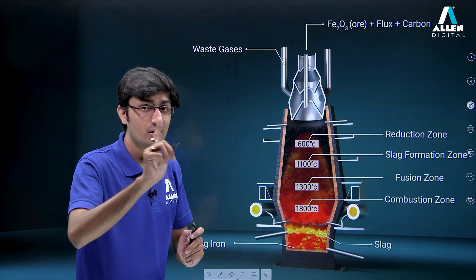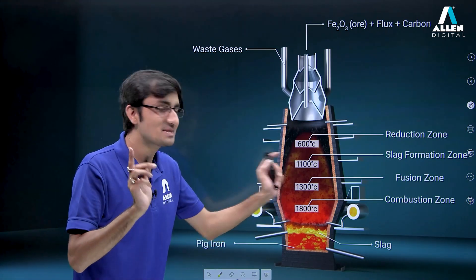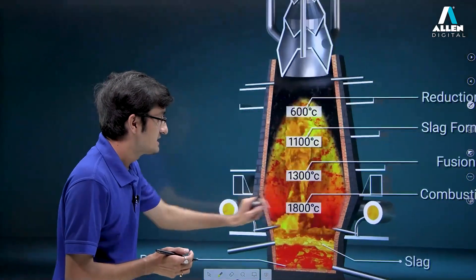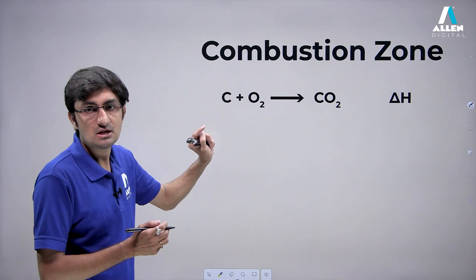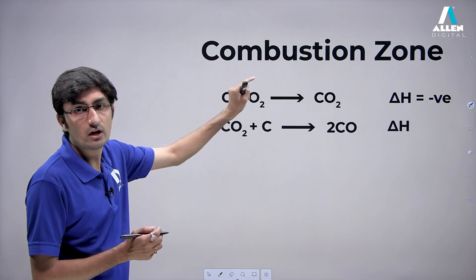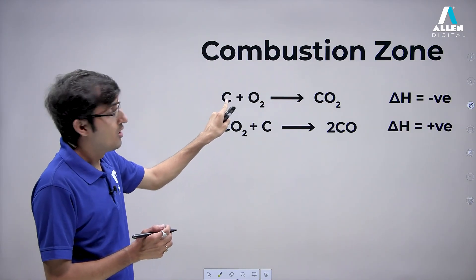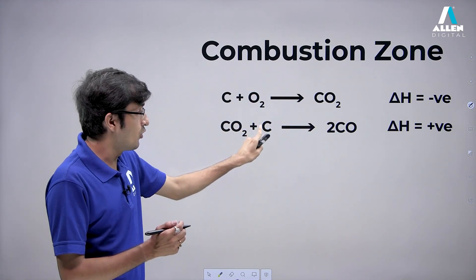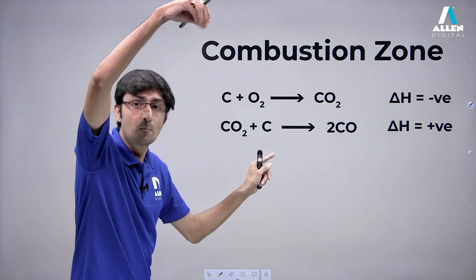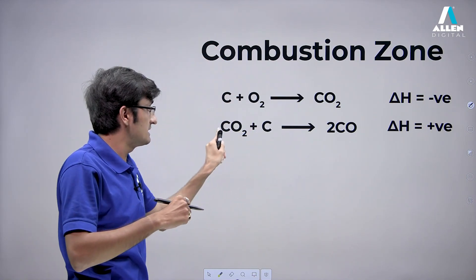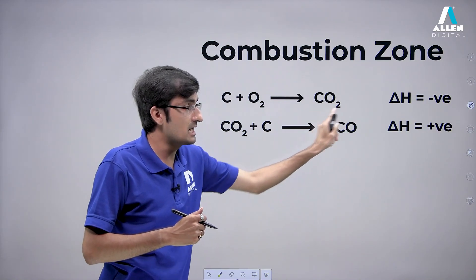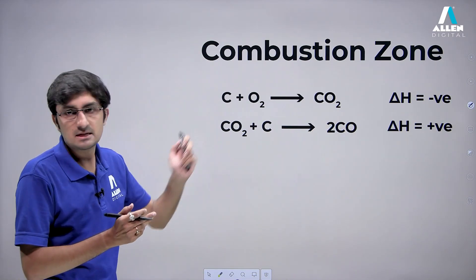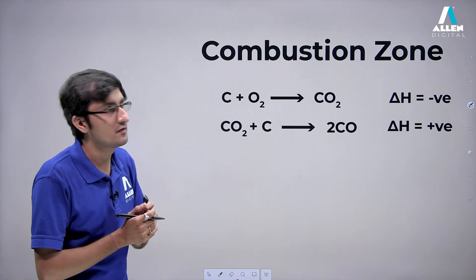Let's study the reactions in each zone and understand the mechanism. Remember, you don't need to memorize the reactions — understand them. First is the combustion zone, which has the highest temperature. As the name suggests, coke mixes with oxygen to form CO₂. This CO₂ rises up and reacts with the coke falling from above, producing CO. The first reaction is exothermic and the second reaction is endothermic.